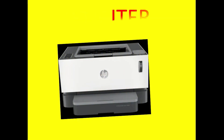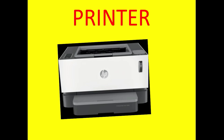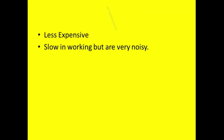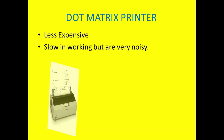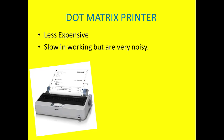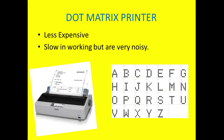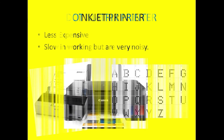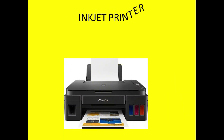Next is printer. It helps you to get the output on paper. The printed copy of output is called hard copy. There are mainly three types of printer. First is dot matrix printer — it is less expensive and slow in working but very noisy. Its output is in dotted form.